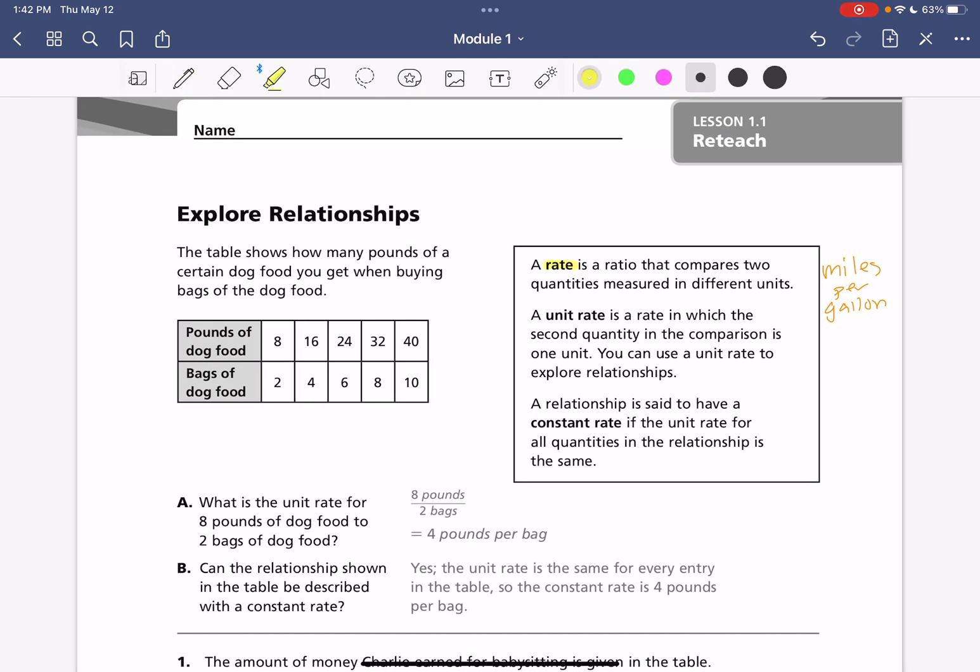We also have unit rate. And that is a rate in which the second quantity in the comparison is one unit. So that's the big piece in this one is that it's one unit. So miles per one gallon. Rate can be two different units. It doesn't have to be to the one in the denominator.